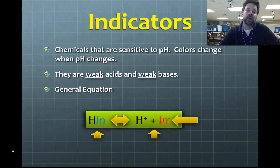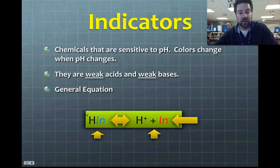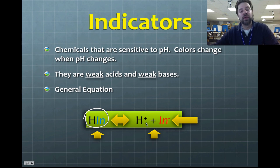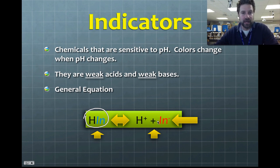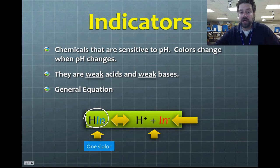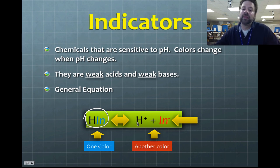Indicators have a general equation: there's a species of indicator attached to hydrogen, and they are in equilibrium with an H+ that has separated from an indicator carrying a negative charge. When H+ is attached to the indicator, it will be one color; when the indicator ionizes from the H+, it will be a different color — in this case, blue and red.